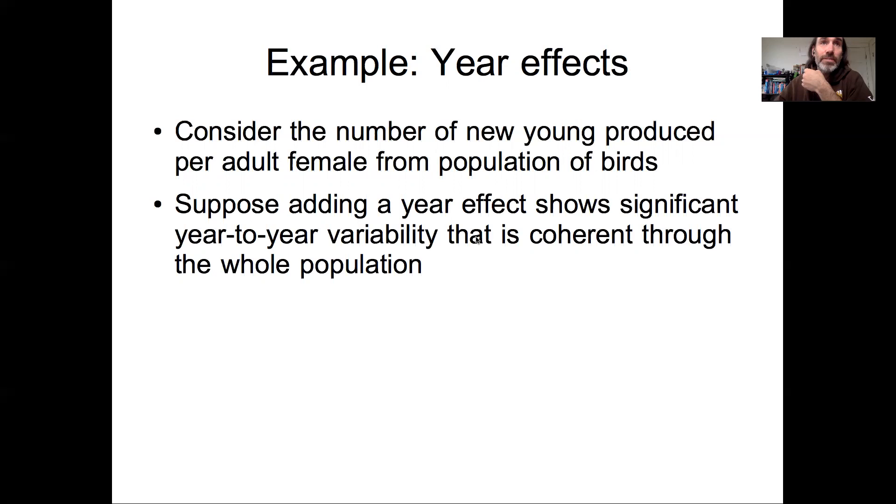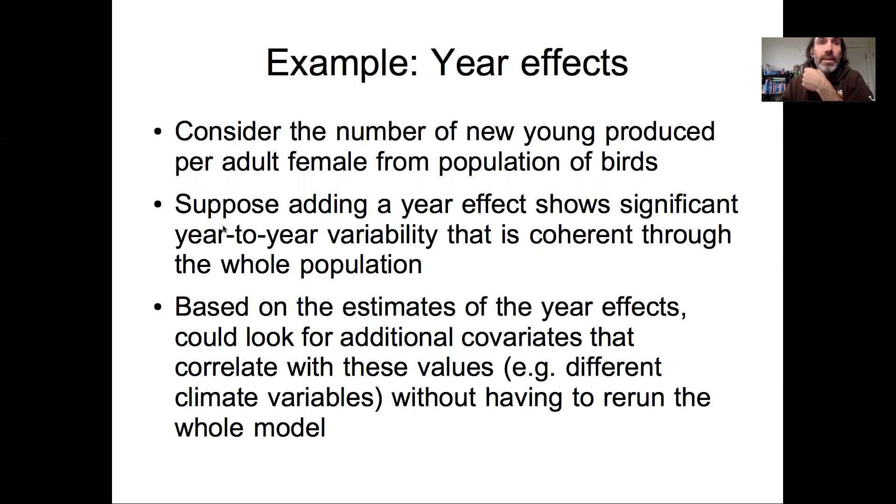So if you've been measuring different subpopulations or different locations, you might see that there's year-to-year variability in reproduction that is shared across those different sites. And so based on those estimates of year effects, you could be looking for additional covariates that might correlate with these values.